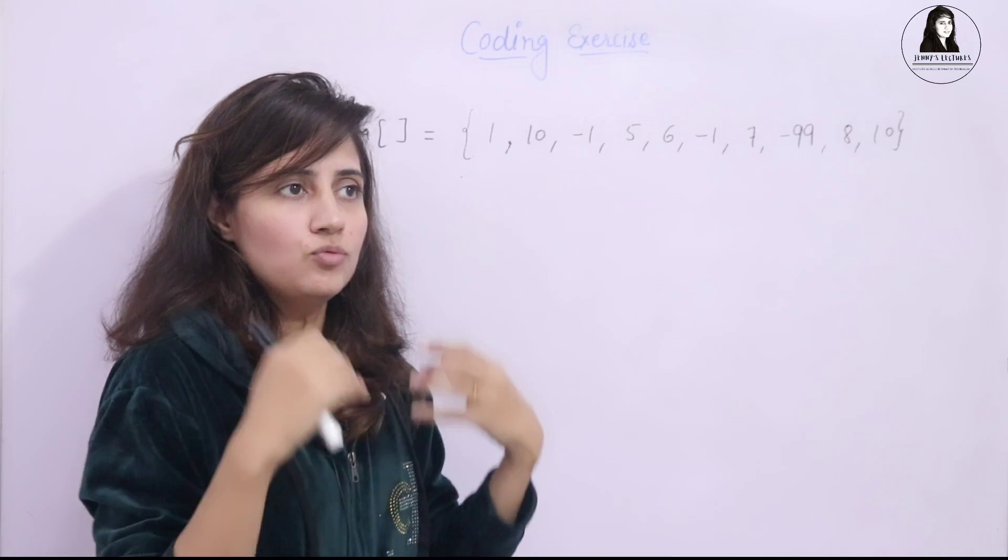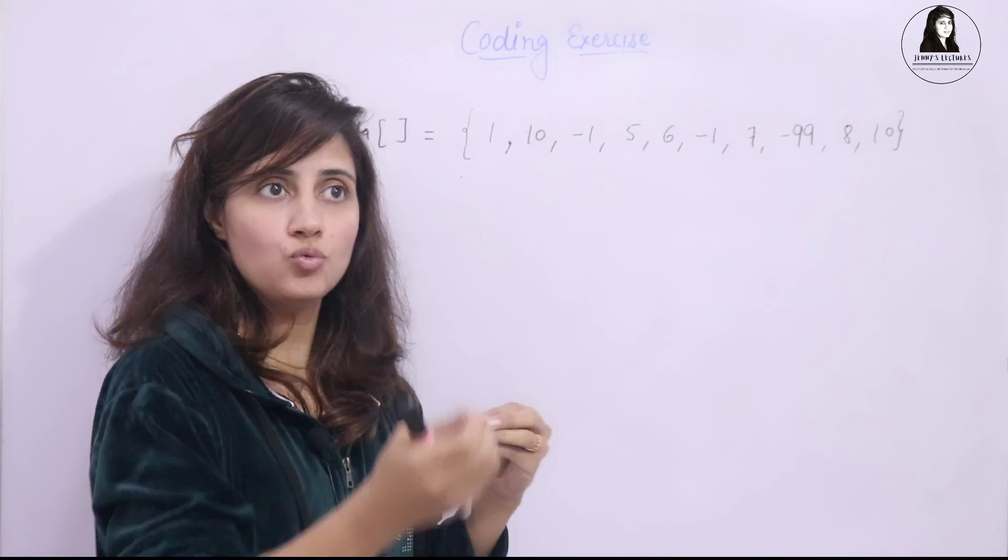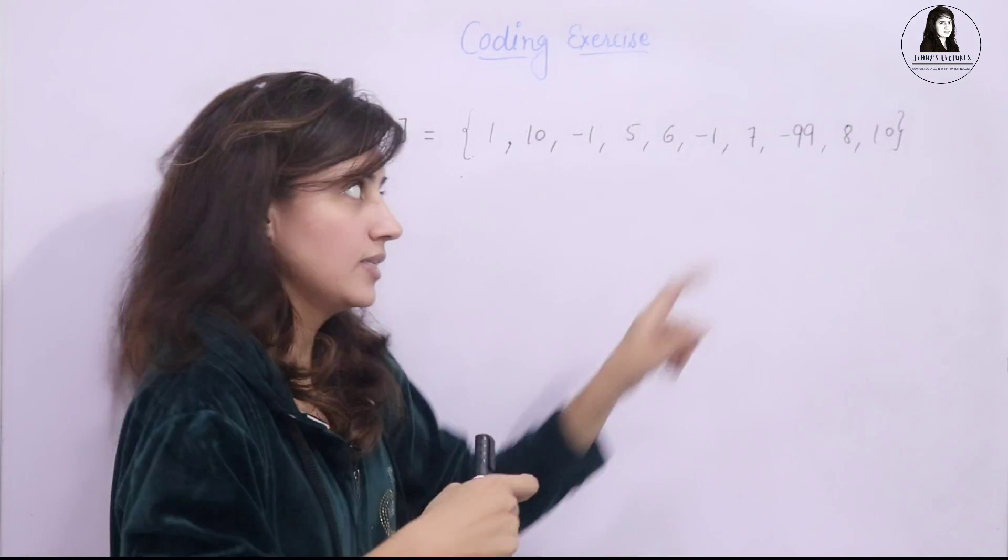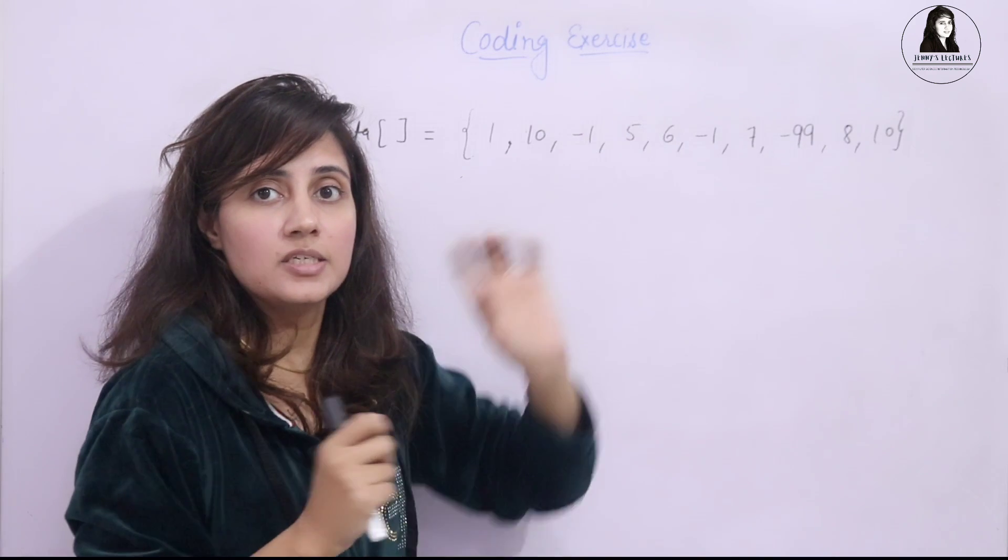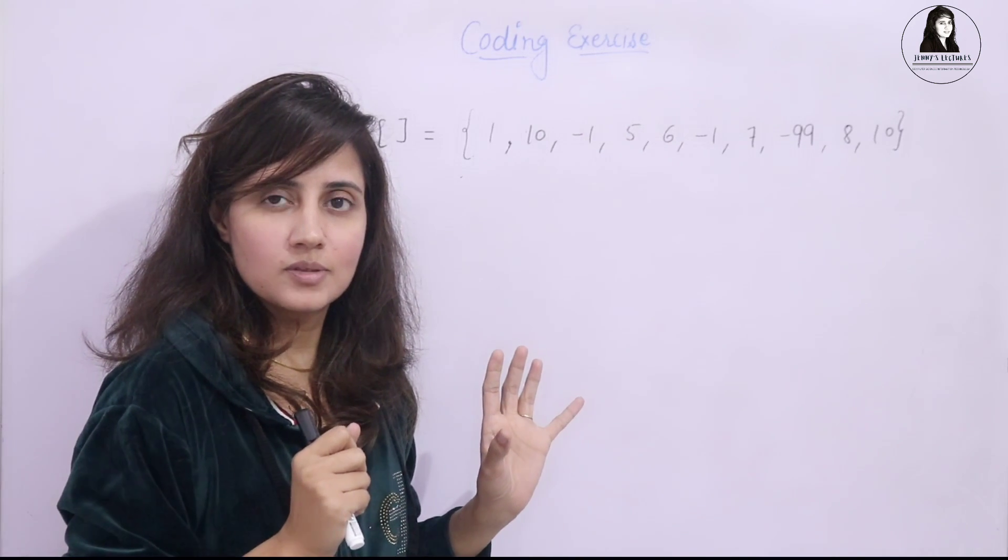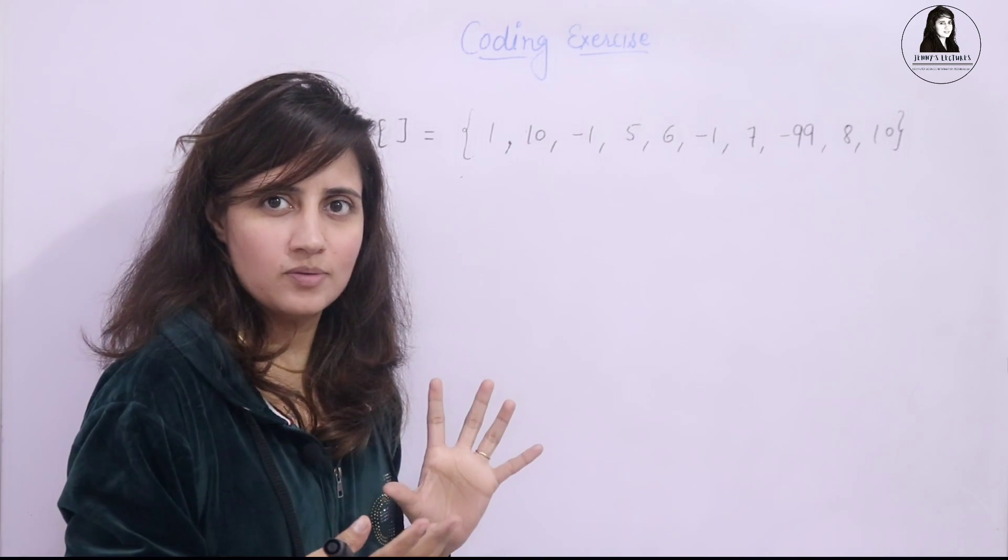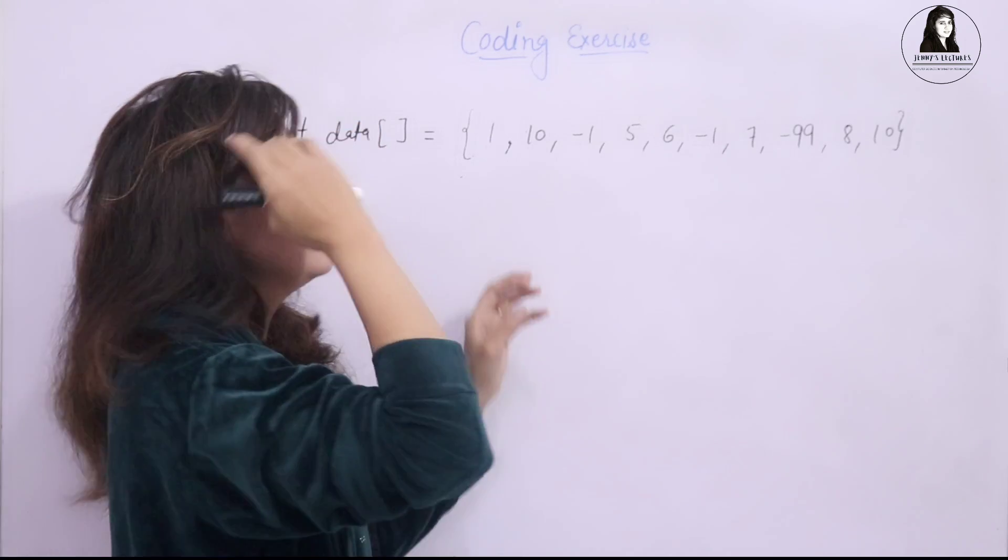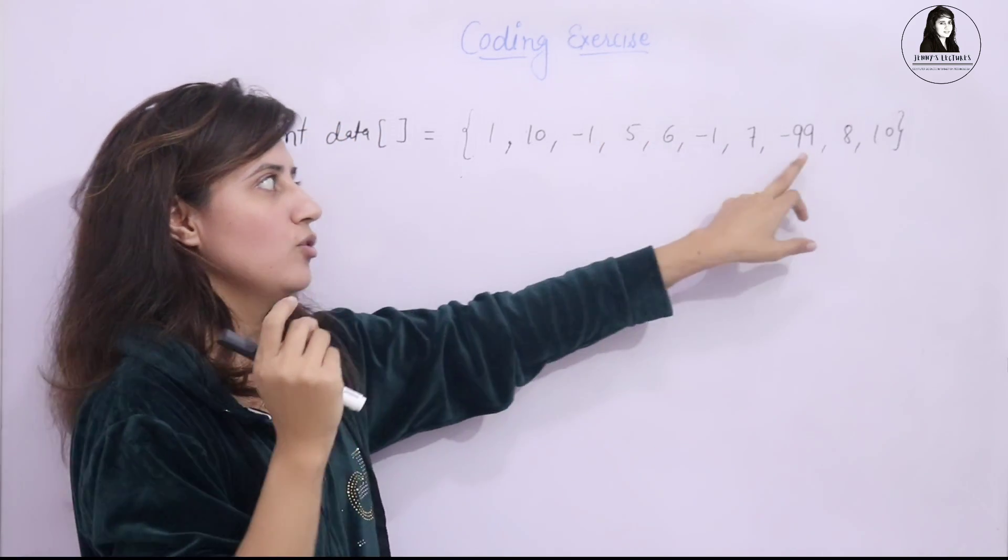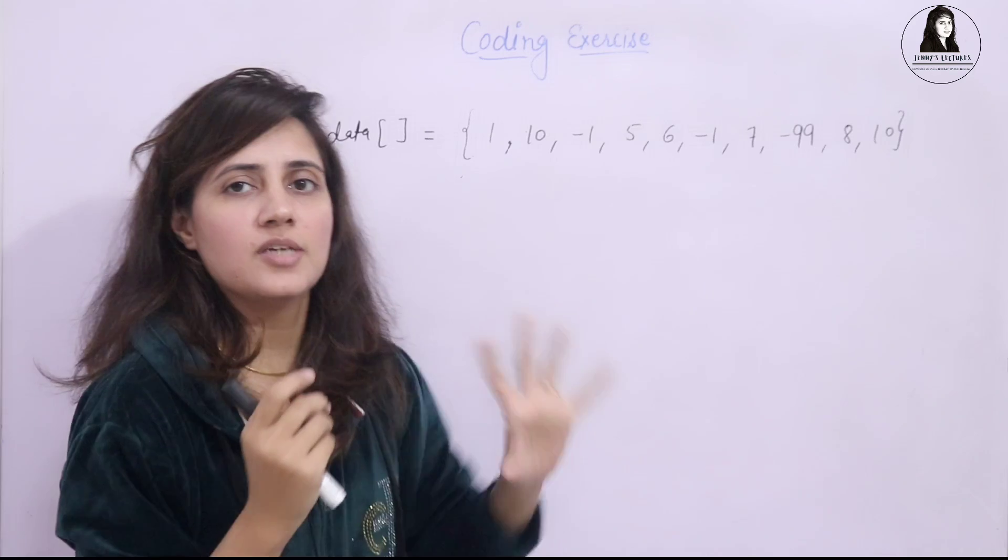And you have to stop processing the data once you reach, once you get the stopping signal and that is minus 99. I hope you got what is the problem statement. You have to just print this array, but you don't have to print minus 1, and you have to stop whenever you will get minus 99.